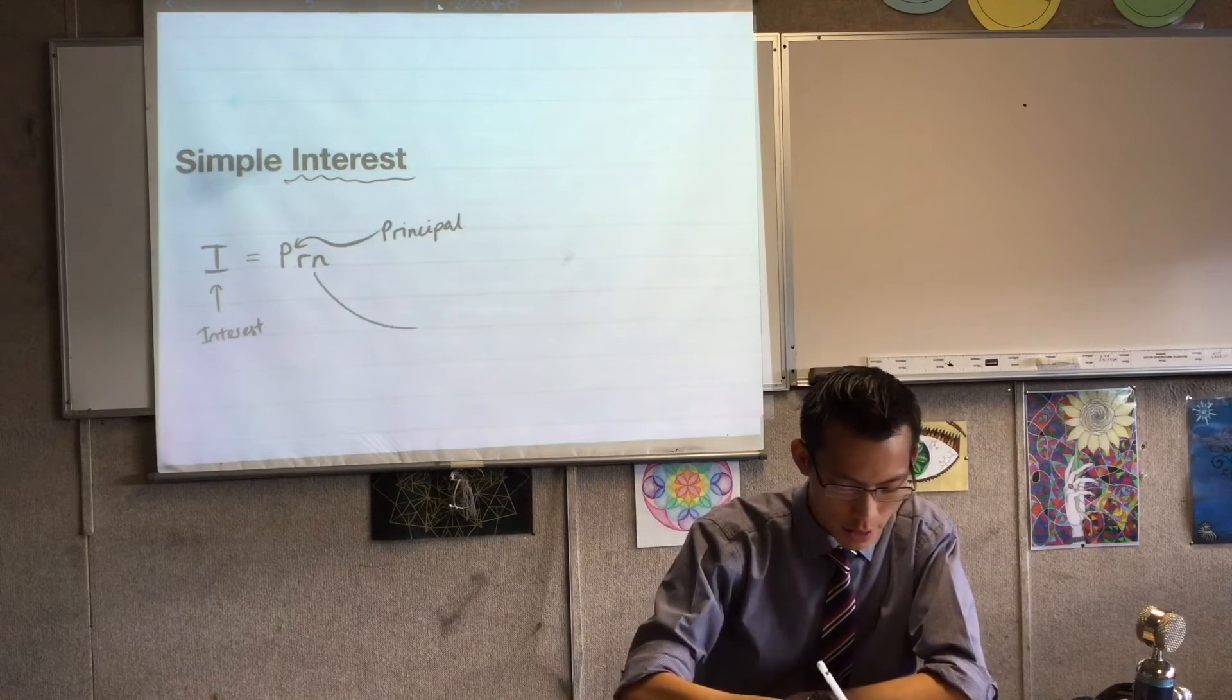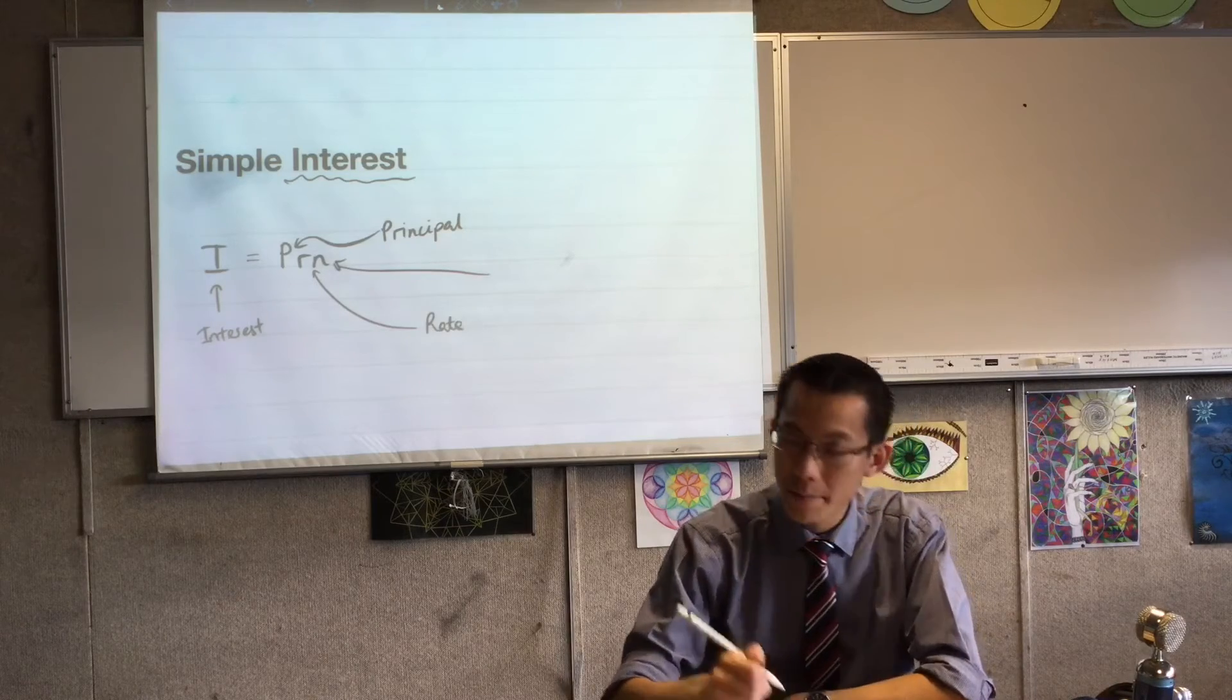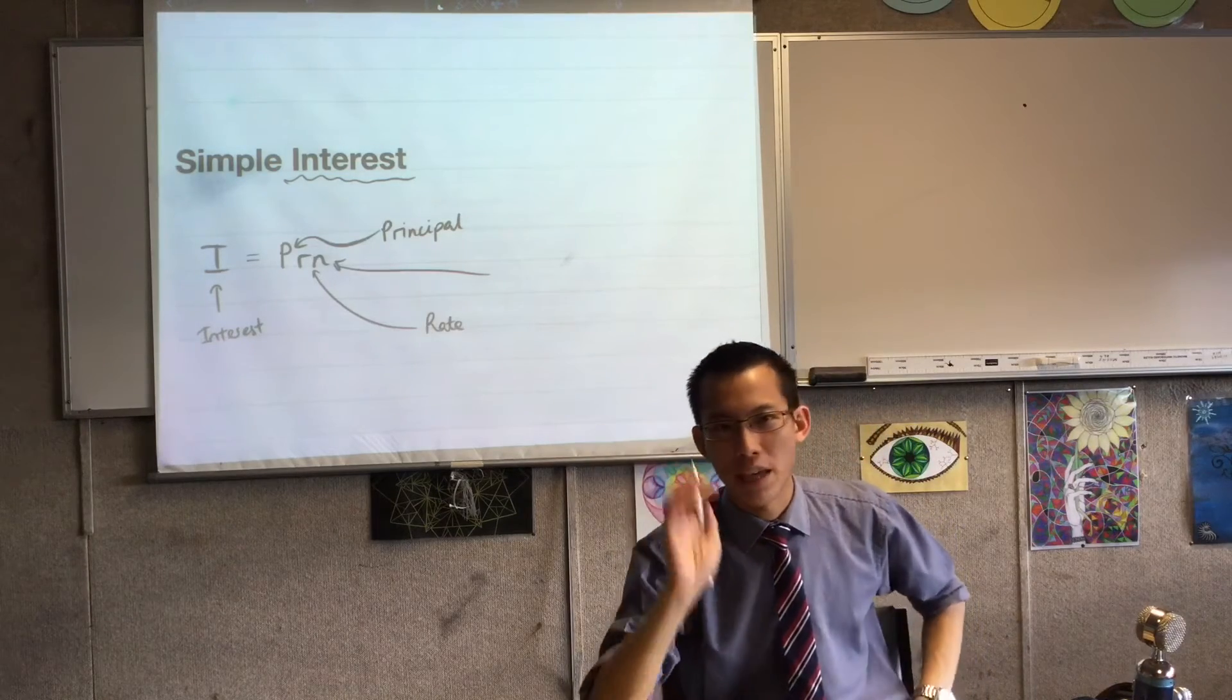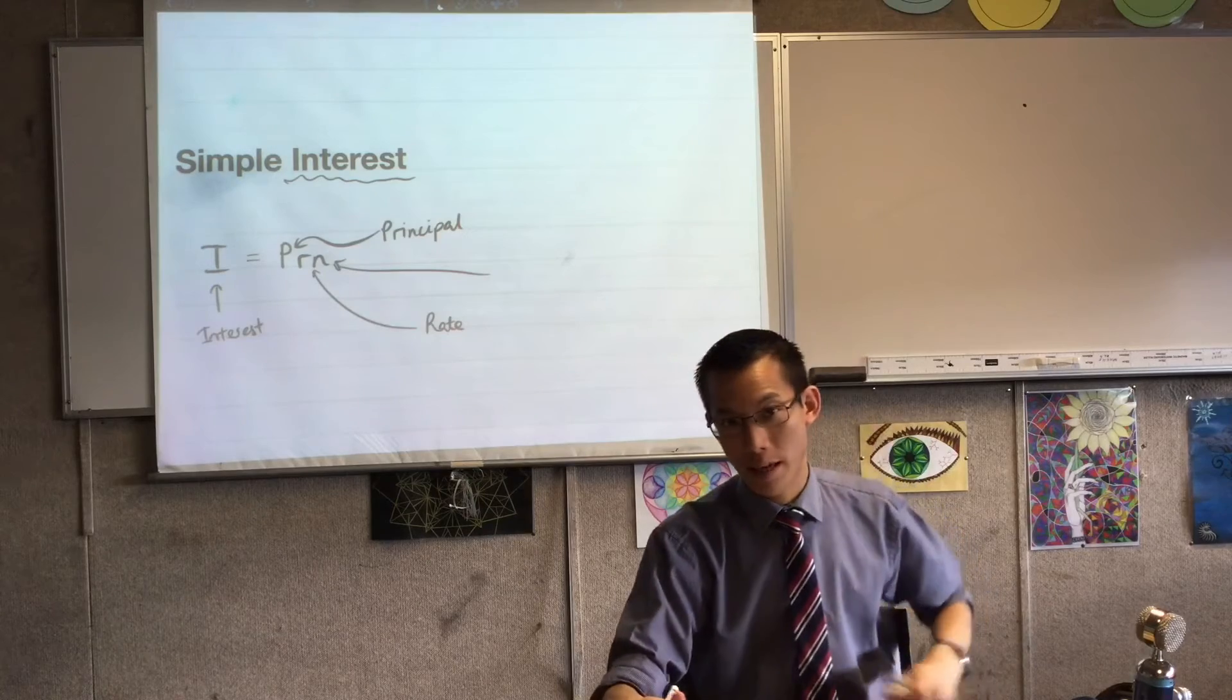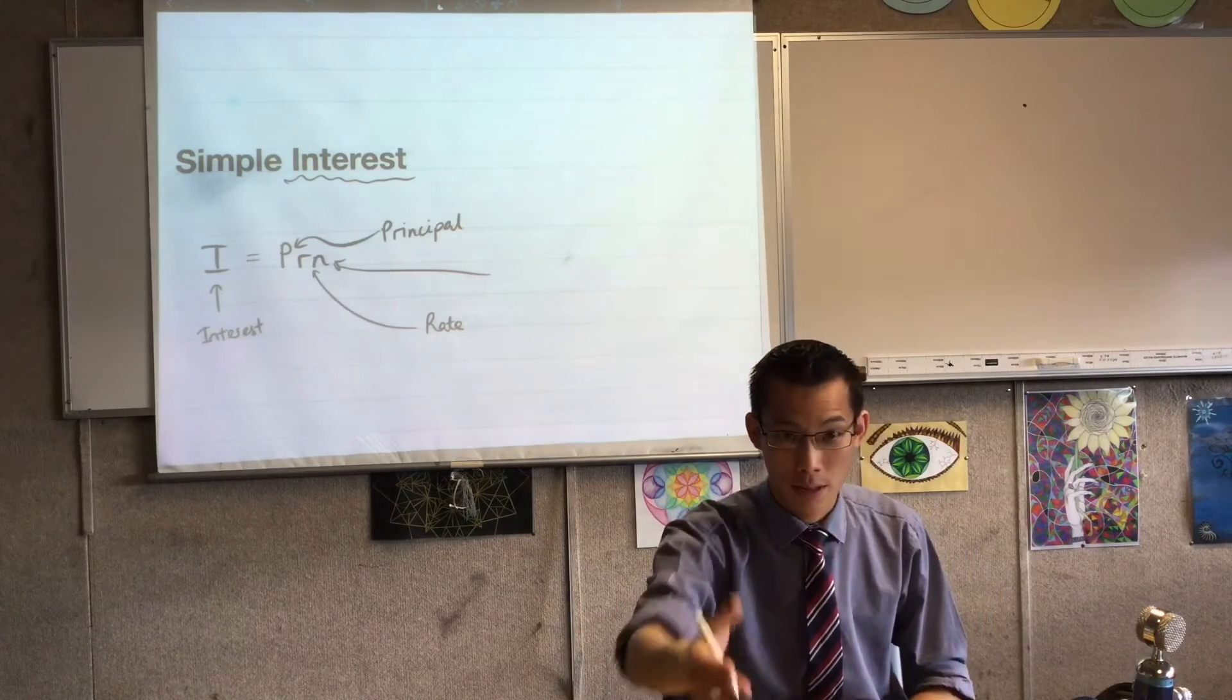Then you've got these two parts over here, R and N, which stand for your interest rate. So that might be something like 5% per annum or 0.1% per annum. It depends on where you're investing or who's requesting the payment from you.